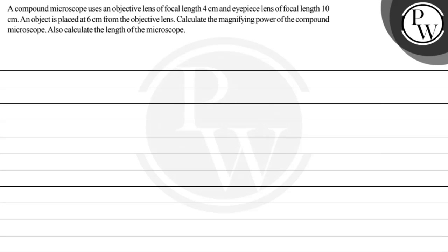Let's read out the question first. A compound microscope uses an objective lens of focal length 4 cm and an eyepiece lens of focal length 10 cm. An object is placed 6 cm from the objective lens. Calculate the magnifying power of the compound microscope, and also calculate the length of the microscope.